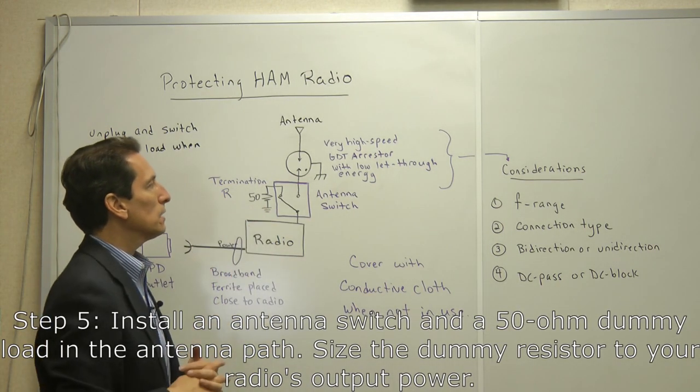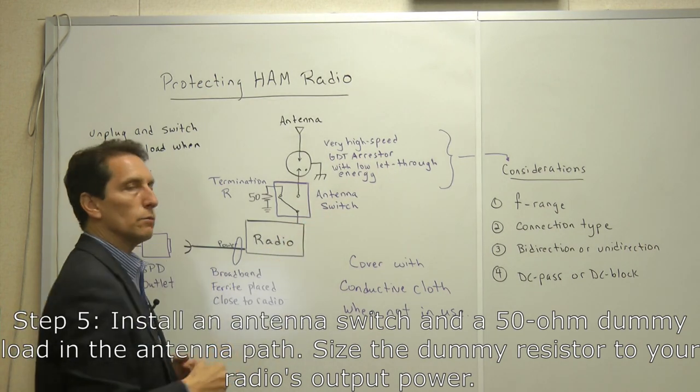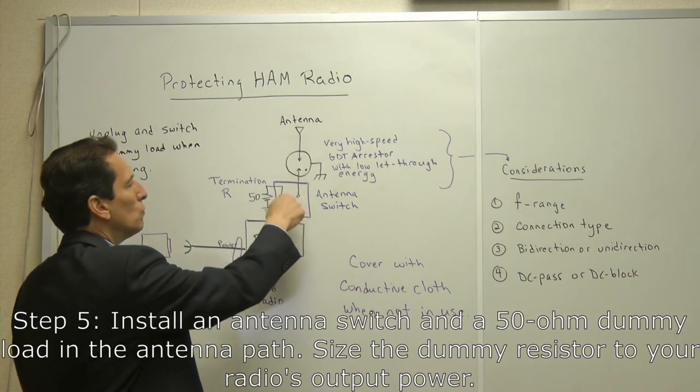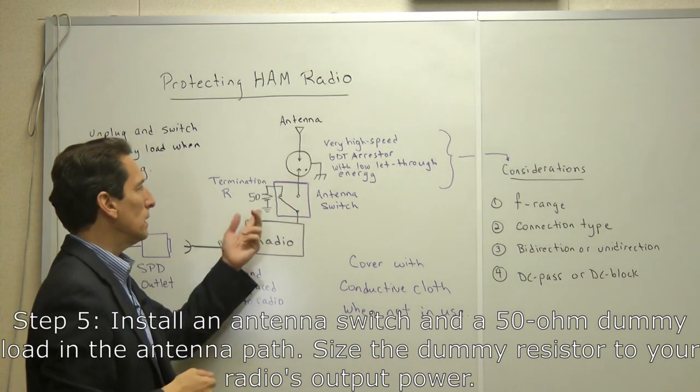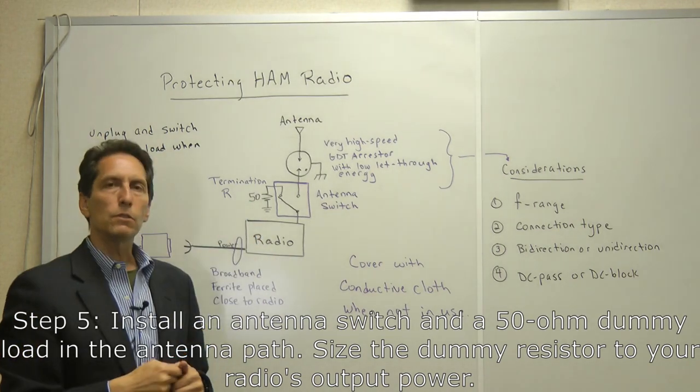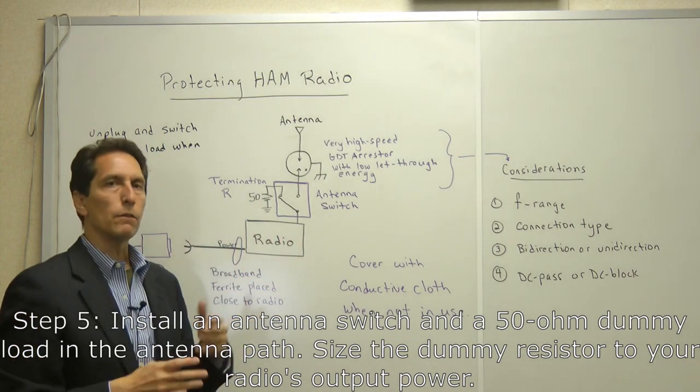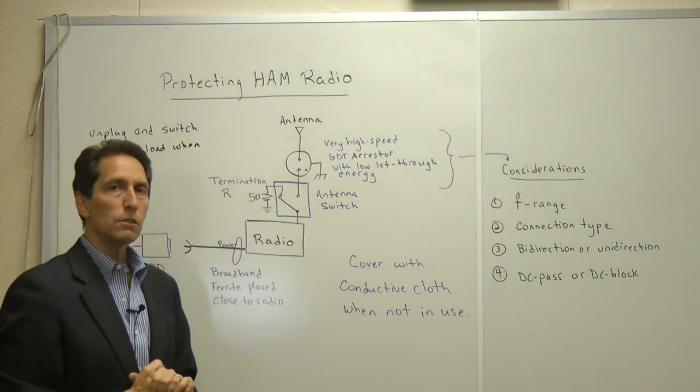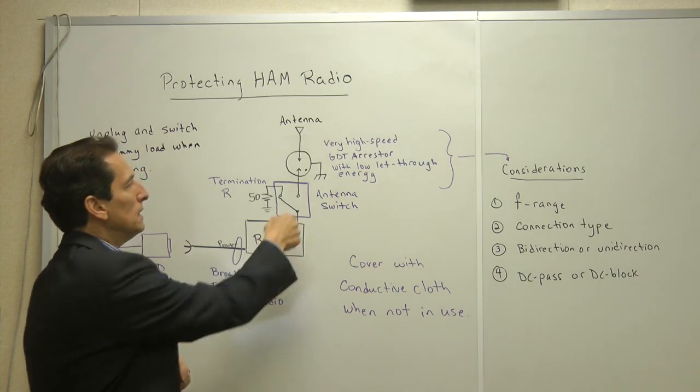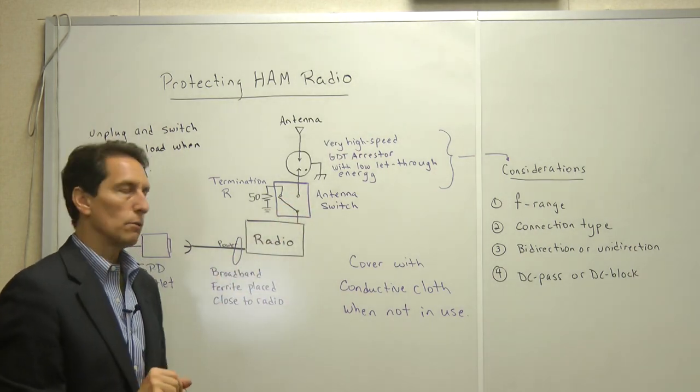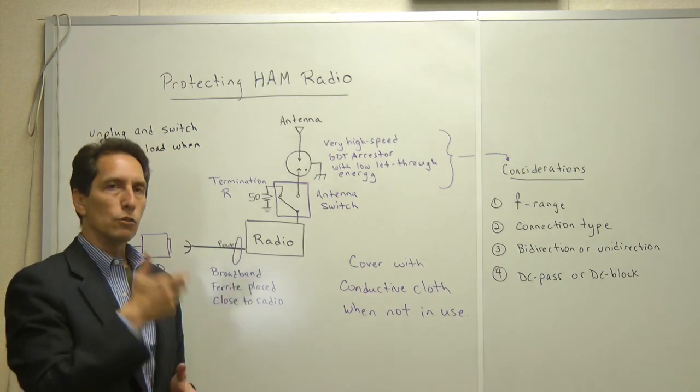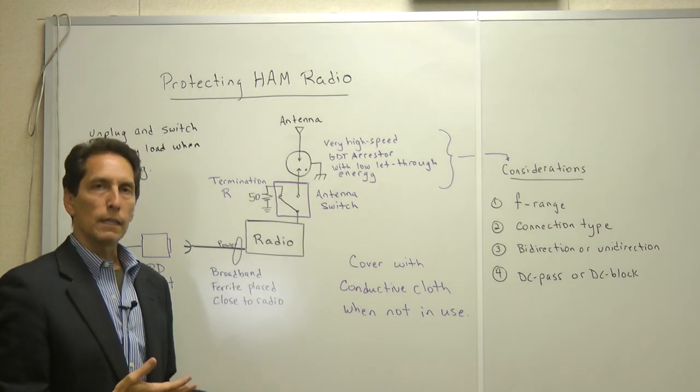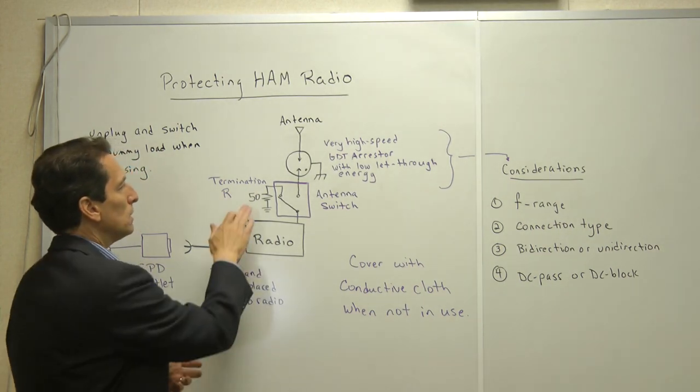So now protecting the antenna connection is a little bit more difficult. The first thing you want is an antenna switch. And you want to have that antenna switch so that when you're not using the radio, you can switch it over to a dummy load. Typically that's 50 ohms. You want to size this 50 ohm resistor to the radio itself. If the radio will output 100 watts of power, you want to make sure you size the resistor accordingly. Now the reason you want to size the resistor that way is it's very easy to forget that you've turned the antenna switch over to that dummy load. And then you bring up your radio and you try and transmit and you're not connected to the antenna. And so all that energy goes into the dummy load. You don't want to overheat that dummy load and burn it up. So you want to size it appropriately.